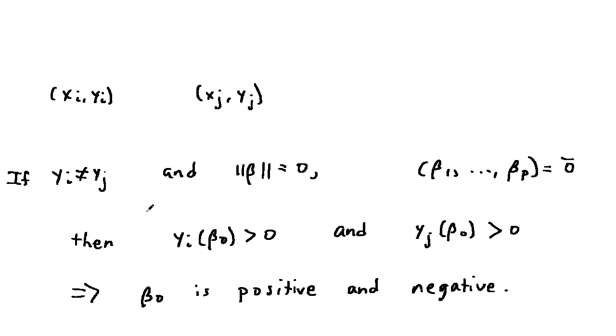So this entails that beta 0 is positive and negative, and that's a contradiction.